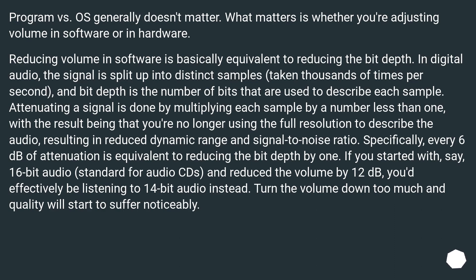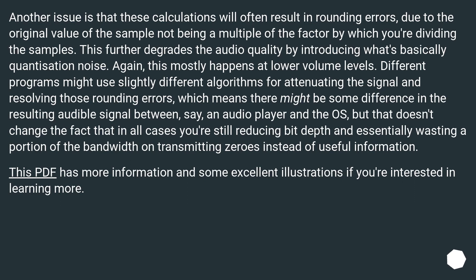If you started with 16-bit audio, standard for audio CDs, and reduced the volume by 12 dB, you'd effectively be listening to 14-bit audio instead. Turn the volume down too much and quality will start to suffer noticeably. Another issue is that these calculations will often result in rounding errors, due to the original sample value not being a multiple of the factor by which you're dividing the samples. This further degrades audio quality by introducing what's basically quantization noise.